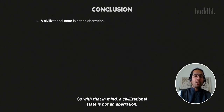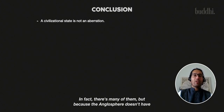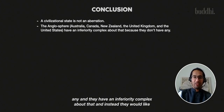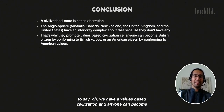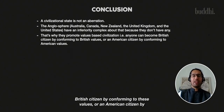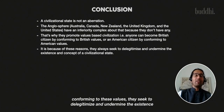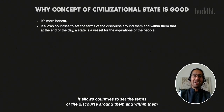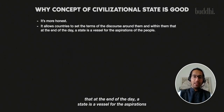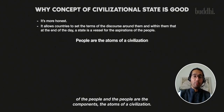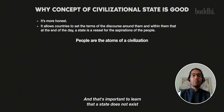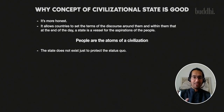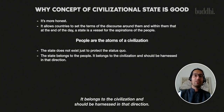A civilizational state is not an aberration — in fact, there are many of them. But because the Anglosphere doesn't have any, and has an inferiority complex about that, they would rather say they have a values-based civilization where anyone can become a British or American citizen by conforming to certain values. They seek to delegitimize and undermine the existence and concept of a civilizational state. The more countries embrace this concept and identity, the better for everyone, because it's more honest. It allows countries to set the terms of their own discords. At the end of the day, a state is a vessel for the aspirations of the people, and the people are the atoms of a civilization. A state does not exist just to protect the status quo — it belongs to the people, it belongs to the civilization, and should be harnessed in that direction.